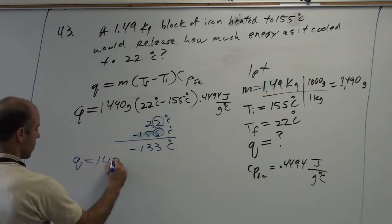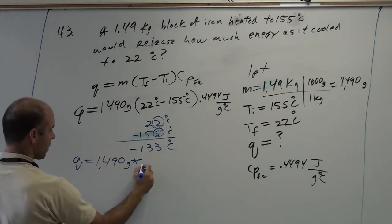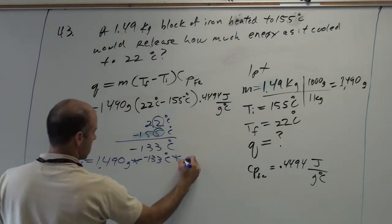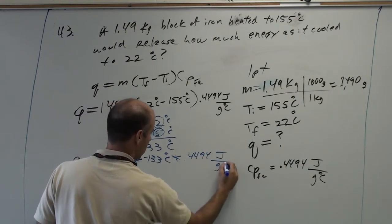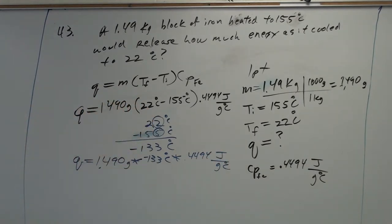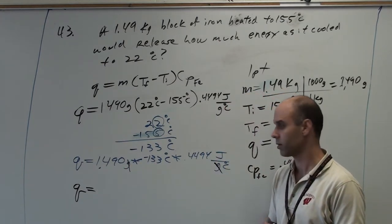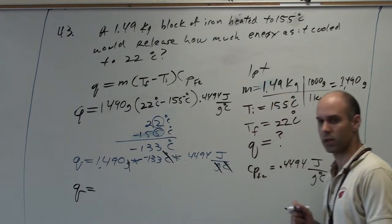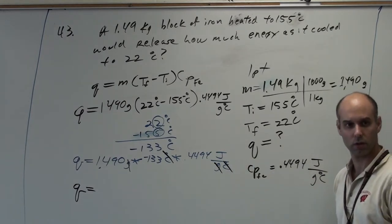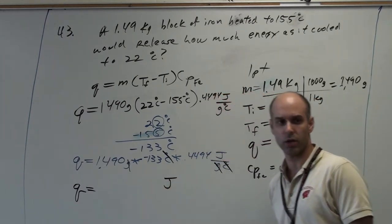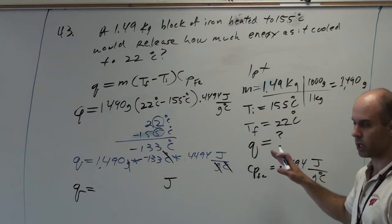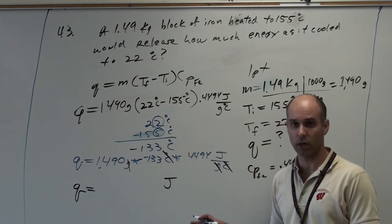Now, I can plug it back into the equation. One thousand four hundred ninety grams times negative one thirty-three Celsius times 0.4494 joules per gram degree Celsius. So, the grams will cancel with the grams. The Celsius cancels with the Celsius. Does anything cancel with the joules? No. What do we measure energy in? Joules. So, you always want to just kind of double-check yourself. If your units don't cancel correctly, then you know you did something wrong.